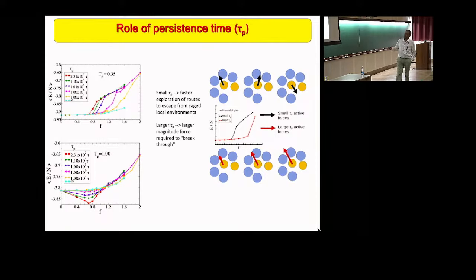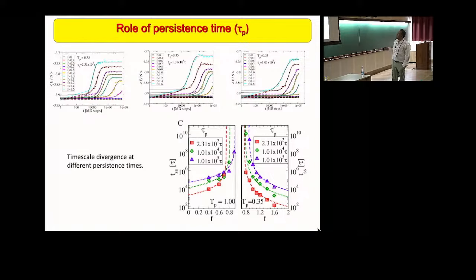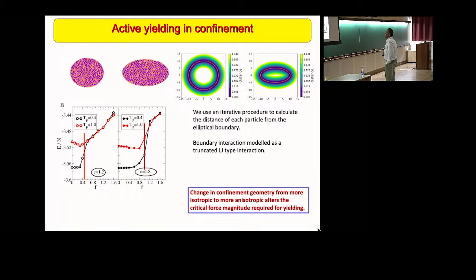This is now just showing quickly that the change in the yielding behavior as a function of the persistence time. A quick summary is the point at which yielding occurs moves to larger values as the persistence time increases. For the different cases that we look at, we again have this apparent diverging behavior of timescales across the yielding transition.